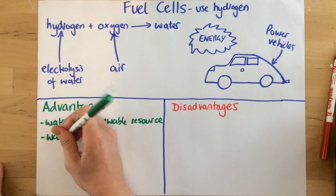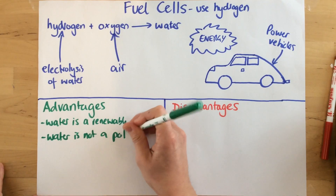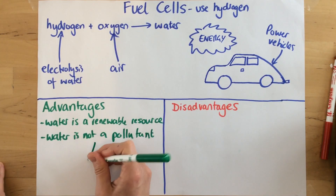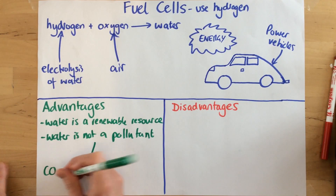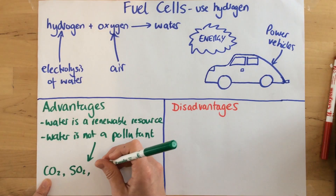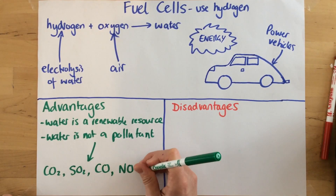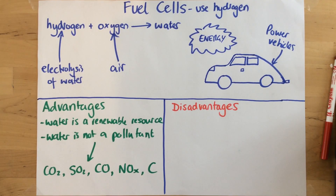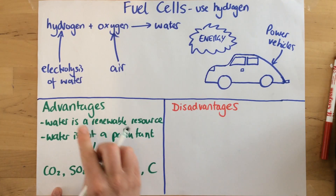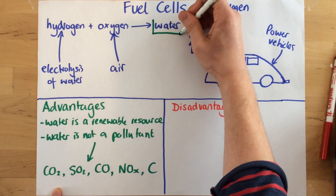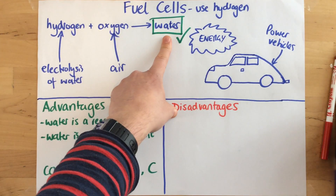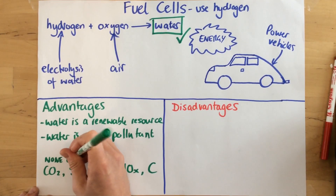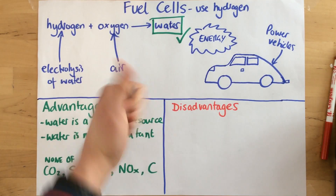Another advantage is that water is not a pollutant. When we burn fossil fuels, we produce lots of different gases: carbon dioxide, sulfur dioxide, carbon monoxide, oxides of nitrogen, and soot. All of these cause different problems — carbon dioxide produces global warming, sulfur dioxide produces acid rain, carbon monoxide is a poisonous gas, and oxides of nitrogen cause photochemical smog and breathing difficulties. When fuel cells are used instead, water is the only product. It's much cleaner and doesn't cause any of these effects — only water is produced, which is much better for the environment.